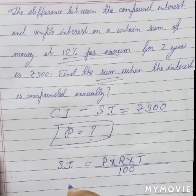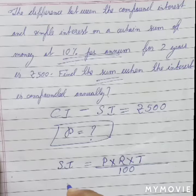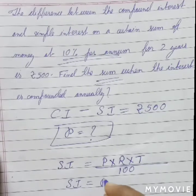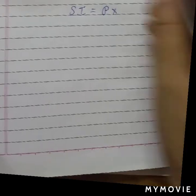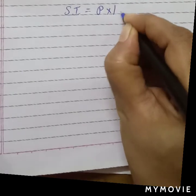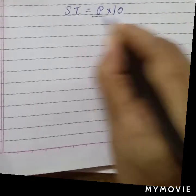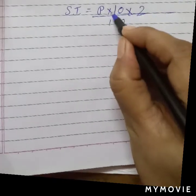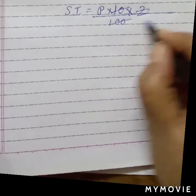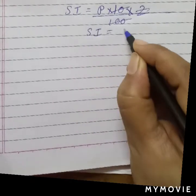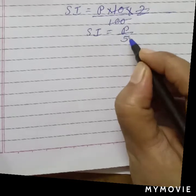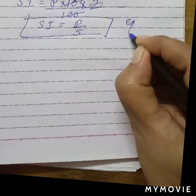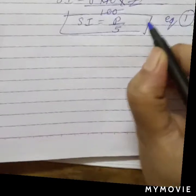What is the simple interest? We don't know the simple interest, so let it be SI. The principal is also unknown. The rate of interest is 10% per annum and the time is 2 years. So the simple interest is going to be P/5. Let's save this as Equation 1.